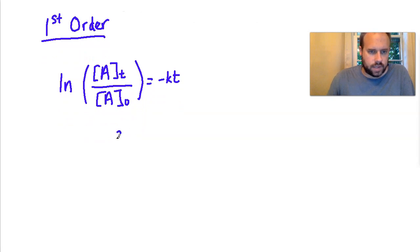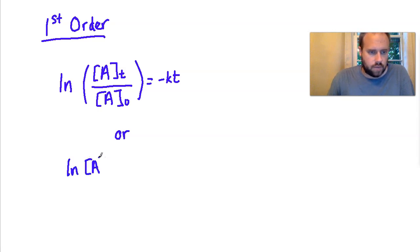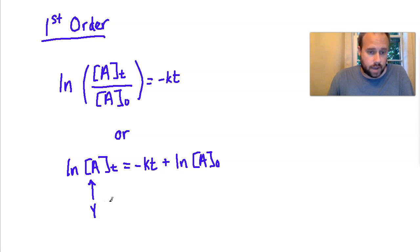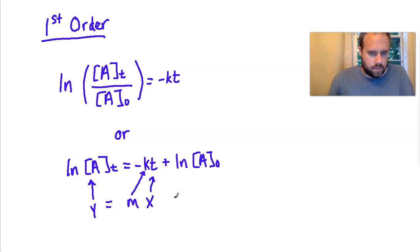We can rearrange this: the ln of the concentration of reactant A at a given final time equals negative k times t plus the natural logarithm of A0. This format more closely represents a slope equation. Here y is the ln of the final concentration, m is the negative rate constant, t is the x value, and the ln of the initial concentration is b.